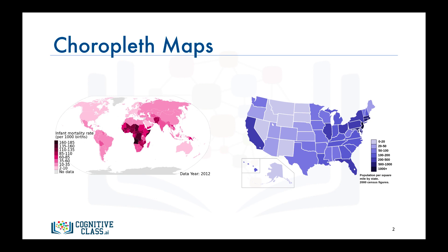Similarly, the map to the right is a choropleth map of the U.S. showing population per square mile by state. Again, the darker the color, the higher the population. According to the map, states in the eastern part of the U.S. tend to be more populous than states in the western part, with California being an exception.